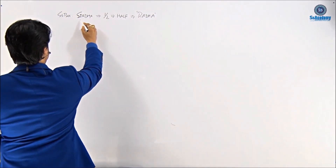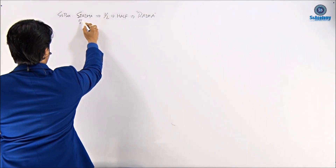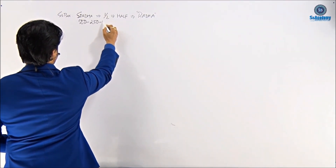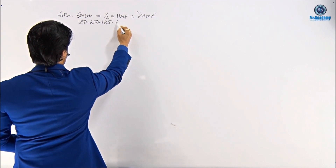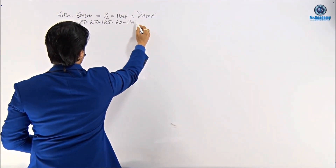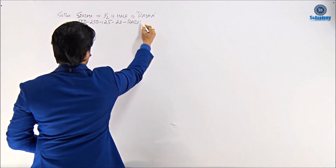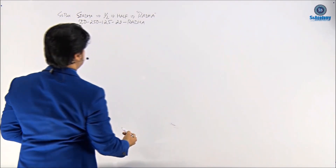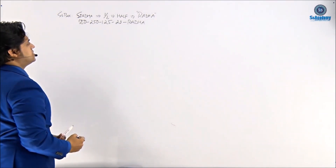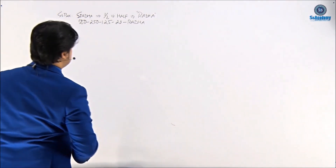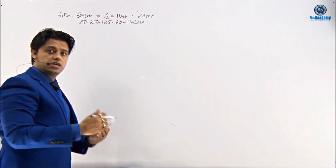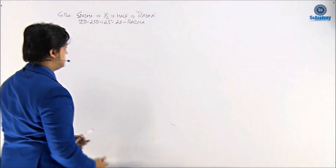The 'C Aadha' — just write it down: 500, 250, 125, and 20. Just write it down as Radha or Aadha, Sri Aadha. This is a very important box, my dear, to remember all the features of syndrome of inappropriate ADH secretion.